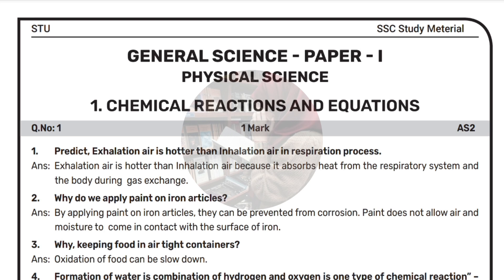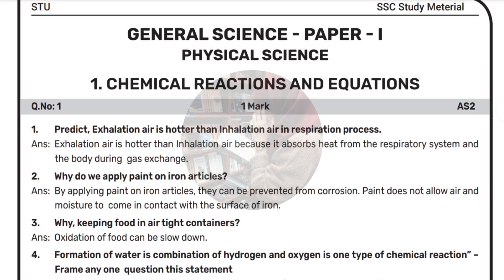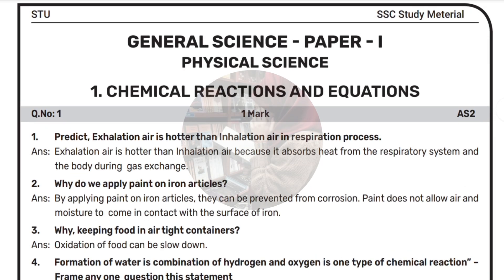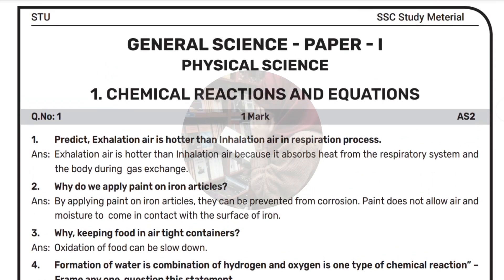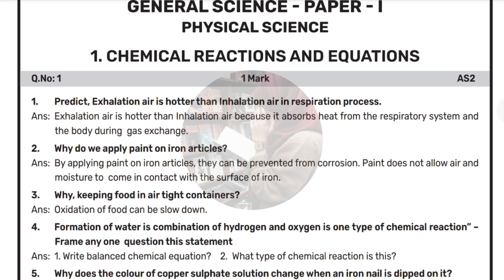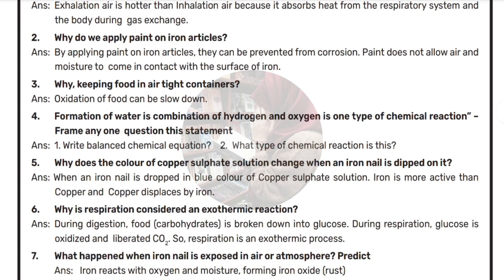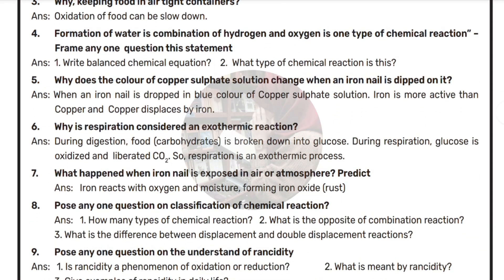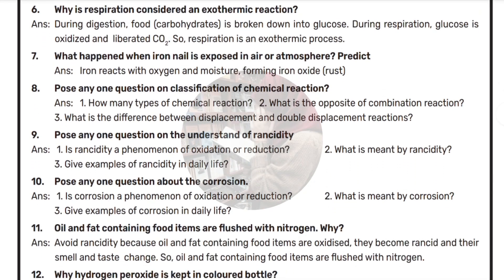First lesson: chemical reactions and equations. The first question will be a one mark question. These are all the important questions for one mark — just note them down. Read it once; if you know the answer, well and good. If you don't know the answer, just write it down in your physics class notes, workbook, or study material so it will be easy for you to refer when you go for your main assessment. Please make use of this video and share it with your friends so they can use it too.